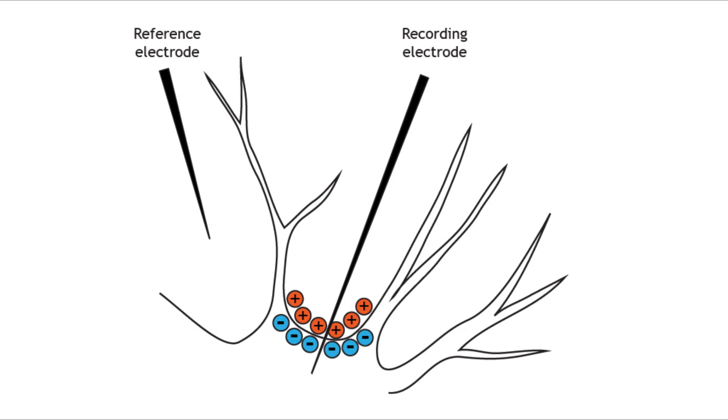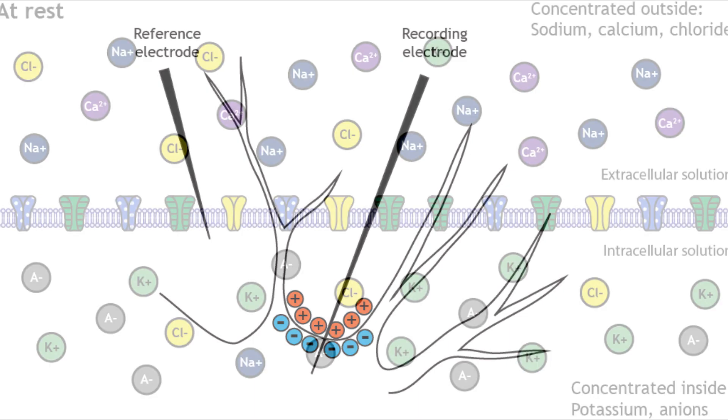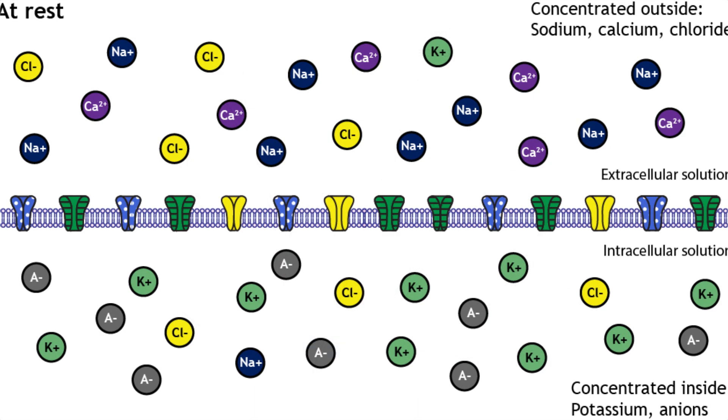Now inside the neuron, the net charge is typically more negative than the outside. And this happens because ions are not distributed equally. Sodium, chloride, and calcium ions tend to be concentrated in the extracellular fluid. Potassium and various large anions like proteins and amino acids are more concentrated inside the cell. And because these charged particles are unequally distributed, the interior ends up negatively charged relative to the exterior when the neuron is at rest. And if you guys remember, that is around minus 65 millivolts.